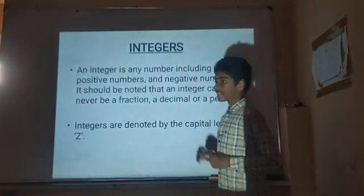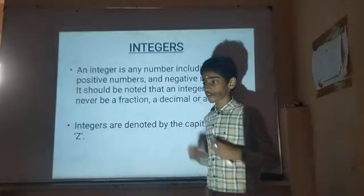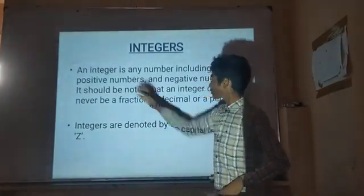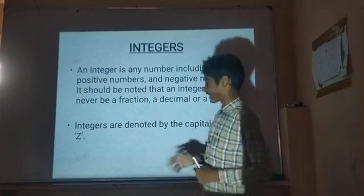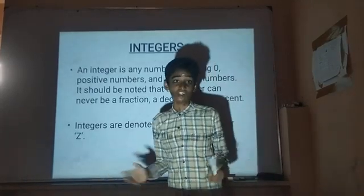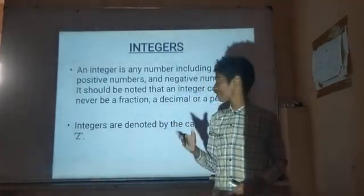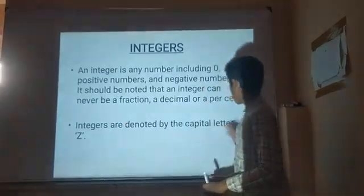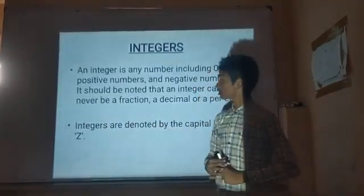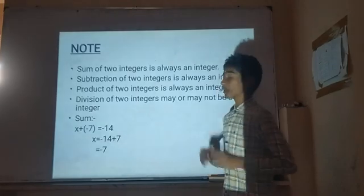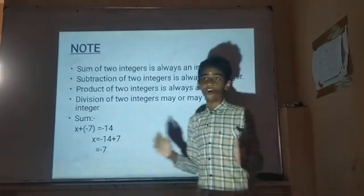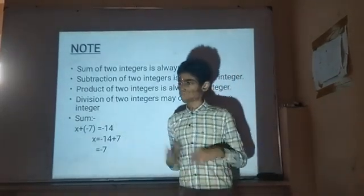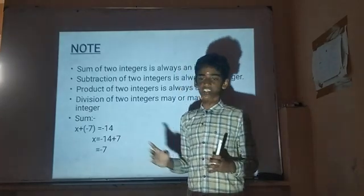Integers are numbers which contain 0, positive numbers, and negative numbers. It should be noted that an integer can never be a fraction, can never be a decimal. Integers are denoted by a capital Z. Note: the sum of two integers is always an integer, the subtraction of two integers is always an integer, and the product of two integers is always an integer.